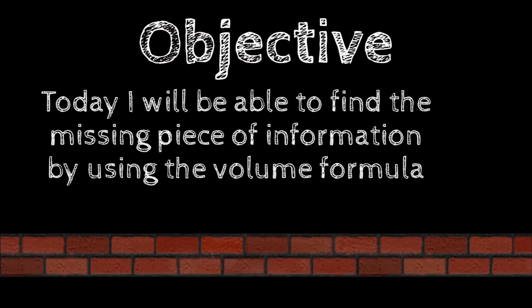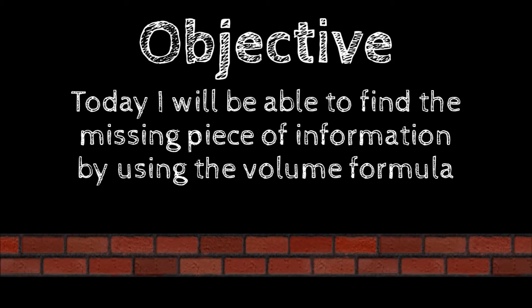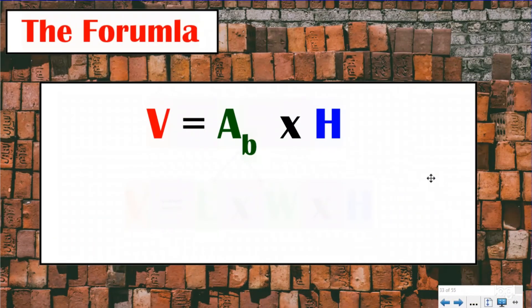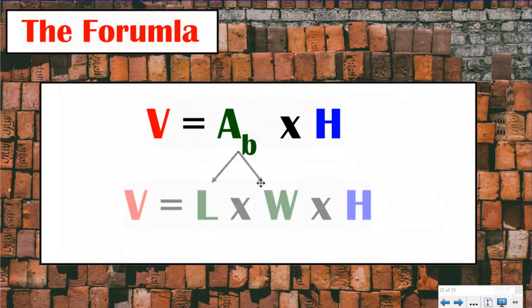Your objective today: I will be able to find the missing piece of information by using my volume formula. To be able to do that, you have to remember what your volume formula is, which we've talked about for several lessons now. Our volume formula is volume equals area of the base times the height. And sometimes when they don't tell you the area of the base, you have to decompose that into the length and the width. So our other volume formula is volume equals length times width times height.